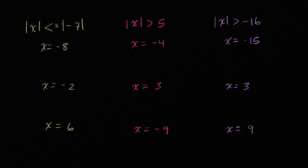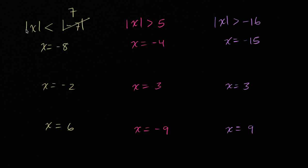Before I even try out the x values, let's see if we can simplify this inequality. What might jump out at you — and I encourage you to try these on your own — is we know what the absolute value of negative 7 is. The absolute value of negative 7 is how far from 0 is negative 7? Well, it's 7 to the left; the distance from negative 7 to 0 is 7. Another way to think about it: the absolute value of any number is always going to be the non-negative version of it. So absolute value of negative 7 is just going to be 7. An equivalent inequality would be that the absolute value of x needs to be less than 7.